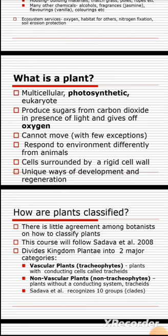A plant is a multicellular, photosynthetic eukaryote. Multicellular means multiple cells. Eukaryote means these are cells that have organelles — meaning your plant will have mature organelles inside, ranging from ribosomes, smooth endoplasmic reticulum, Golgi apparatus, chloroplast, mitochondrion, and nucleus. That's a plant.